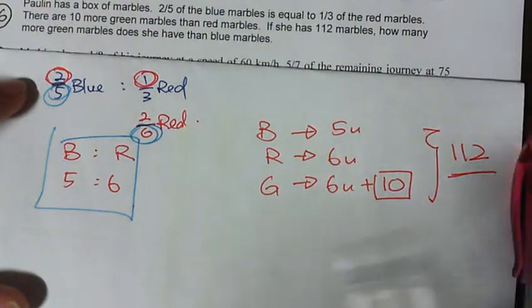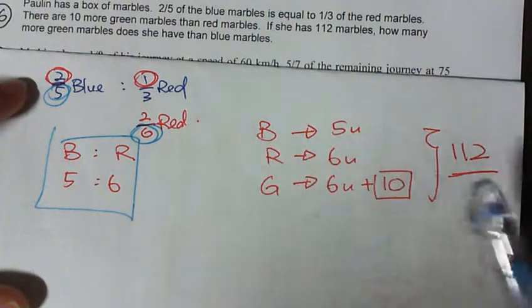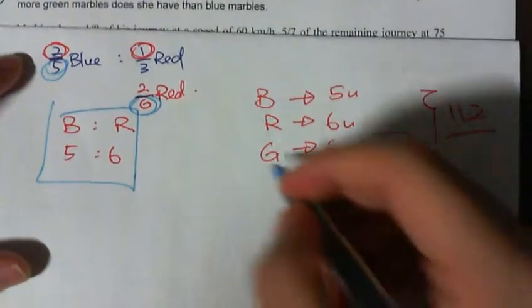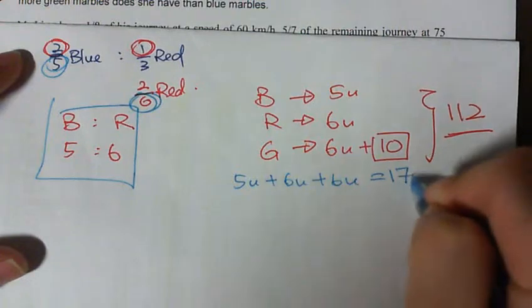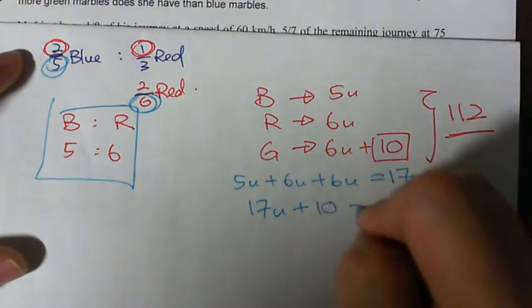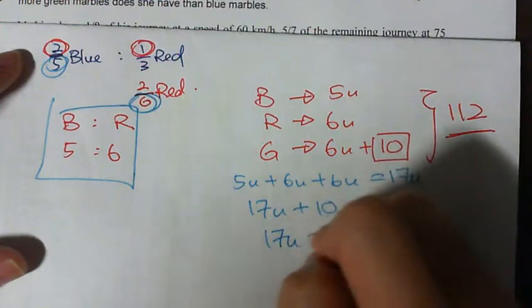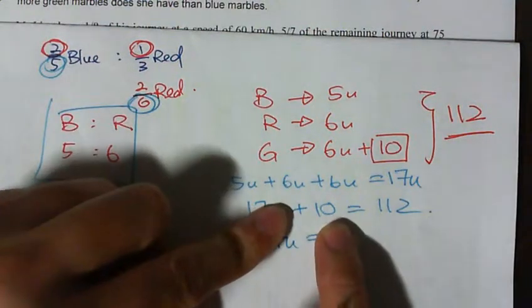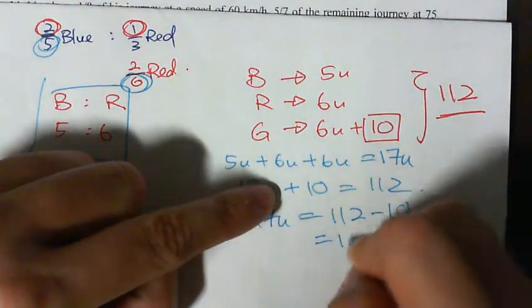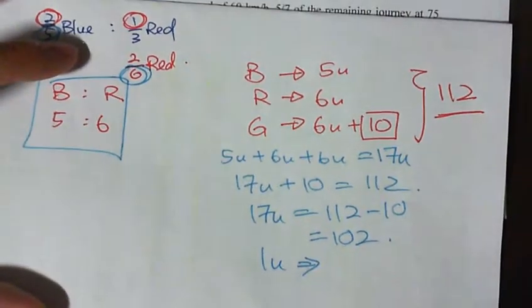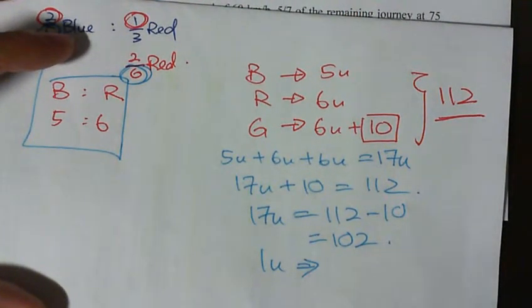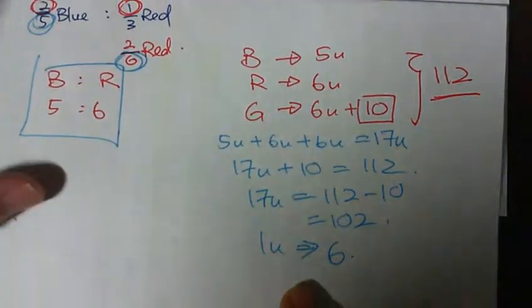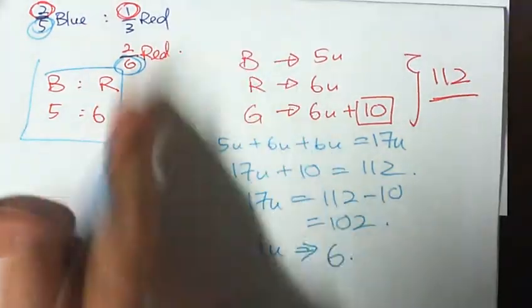Five units plus 6 units plus 6 units equals 17 units. So 17 units plus 10 equals 112. That means 17 units equals 112 minus 10, which equals 102. One unit equals 102 divided by 17, which equals 6. So one unit is 6.